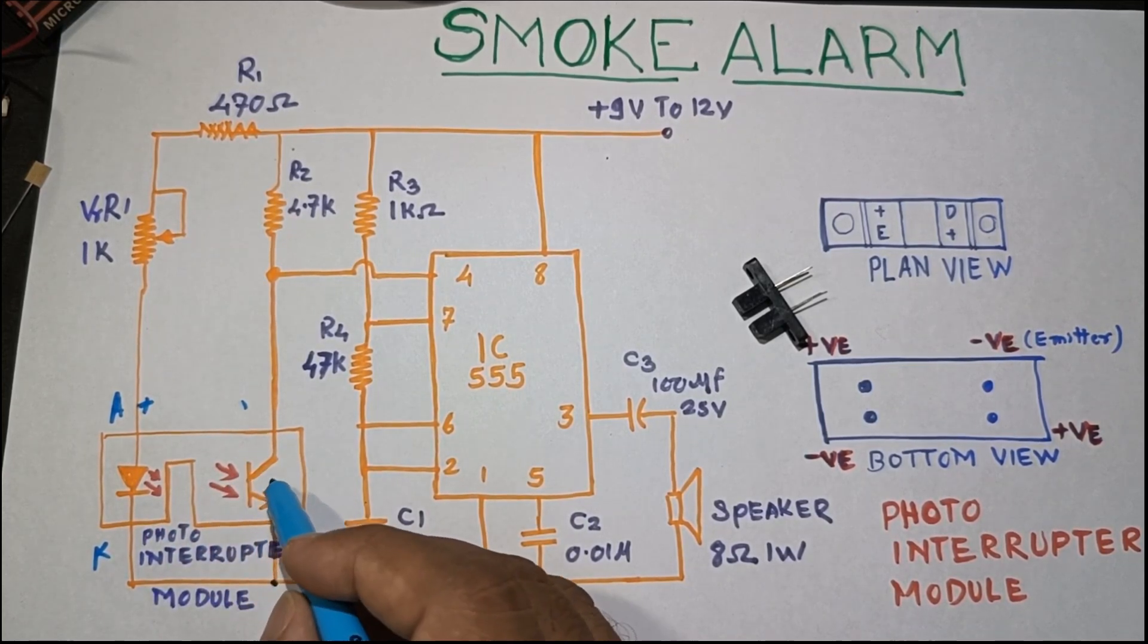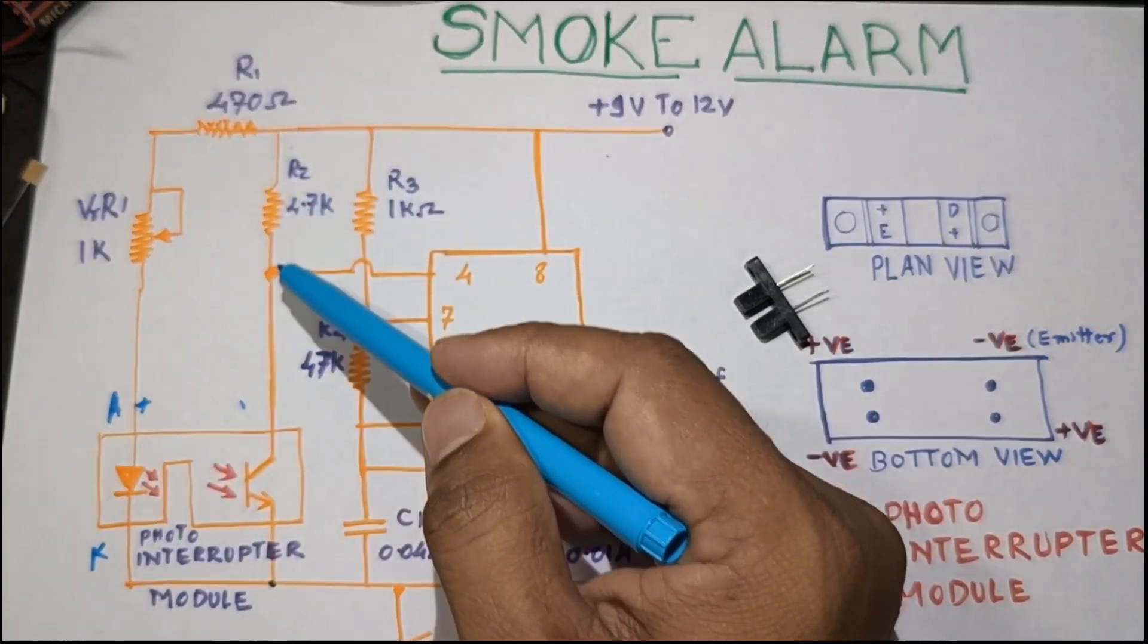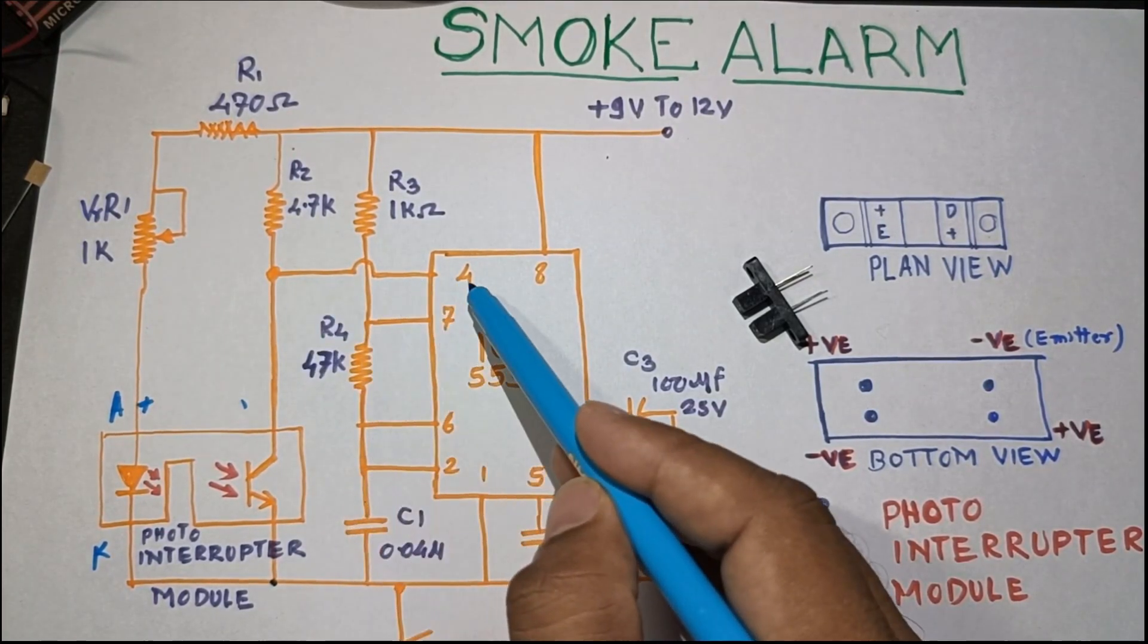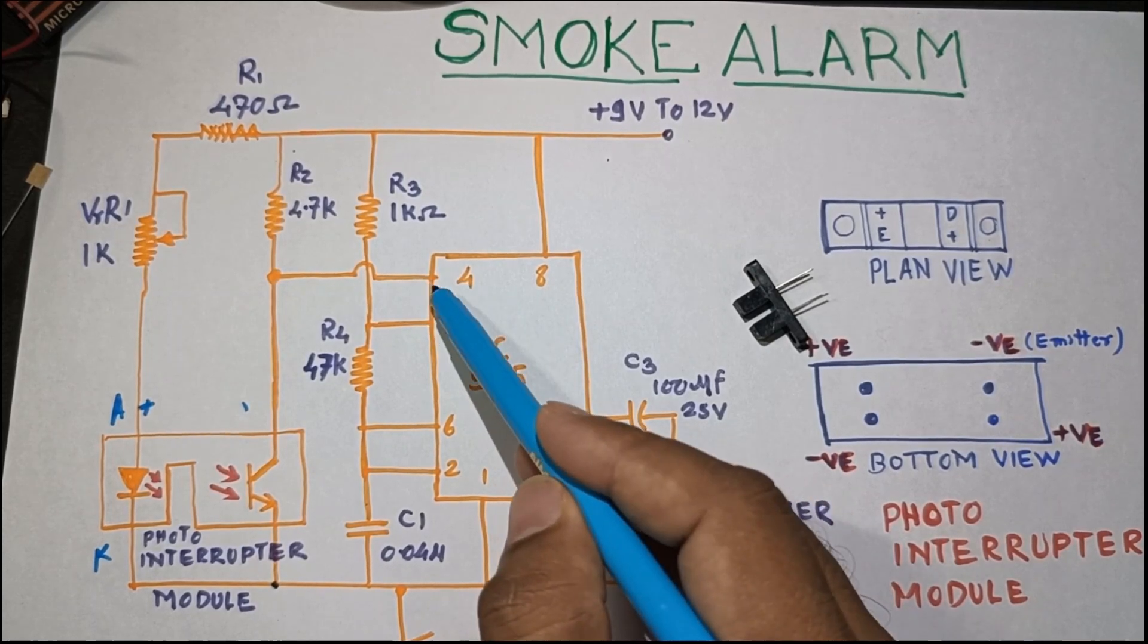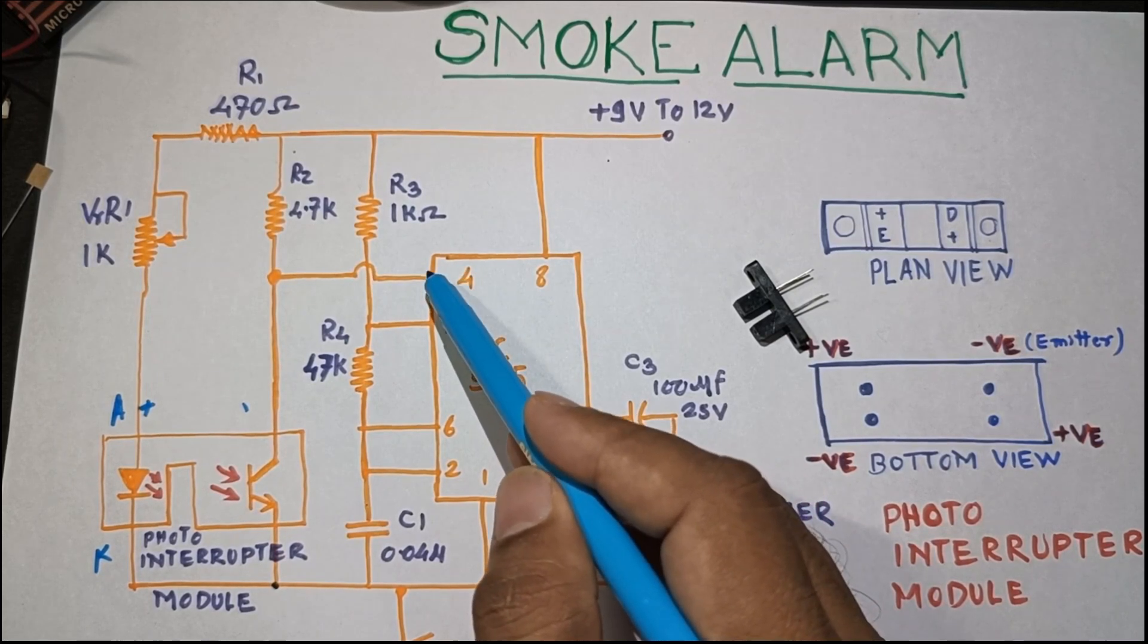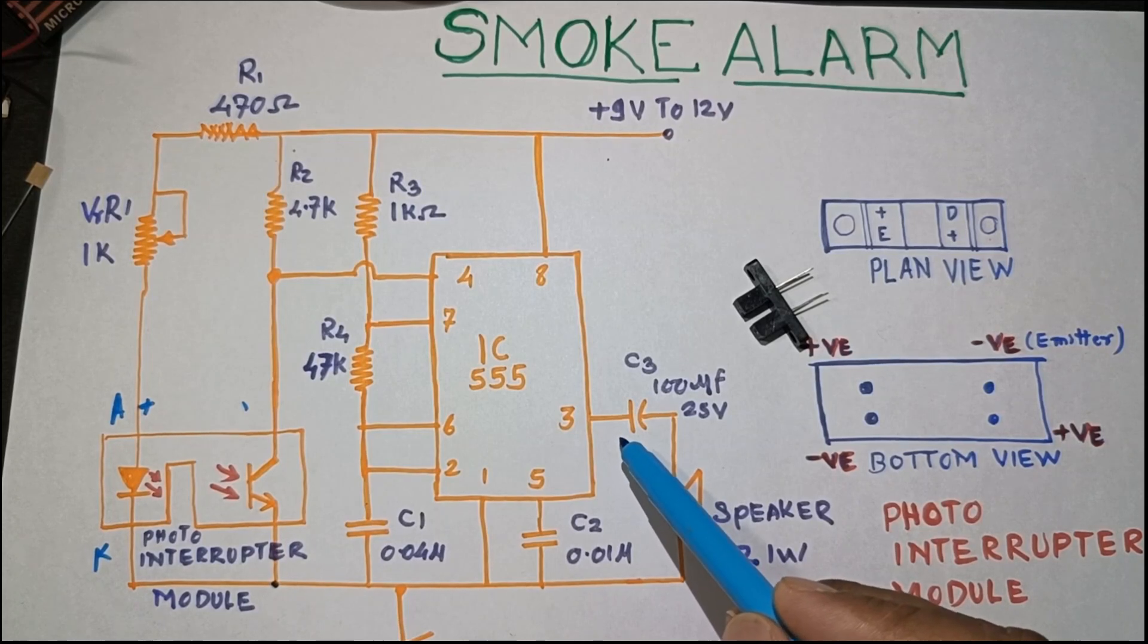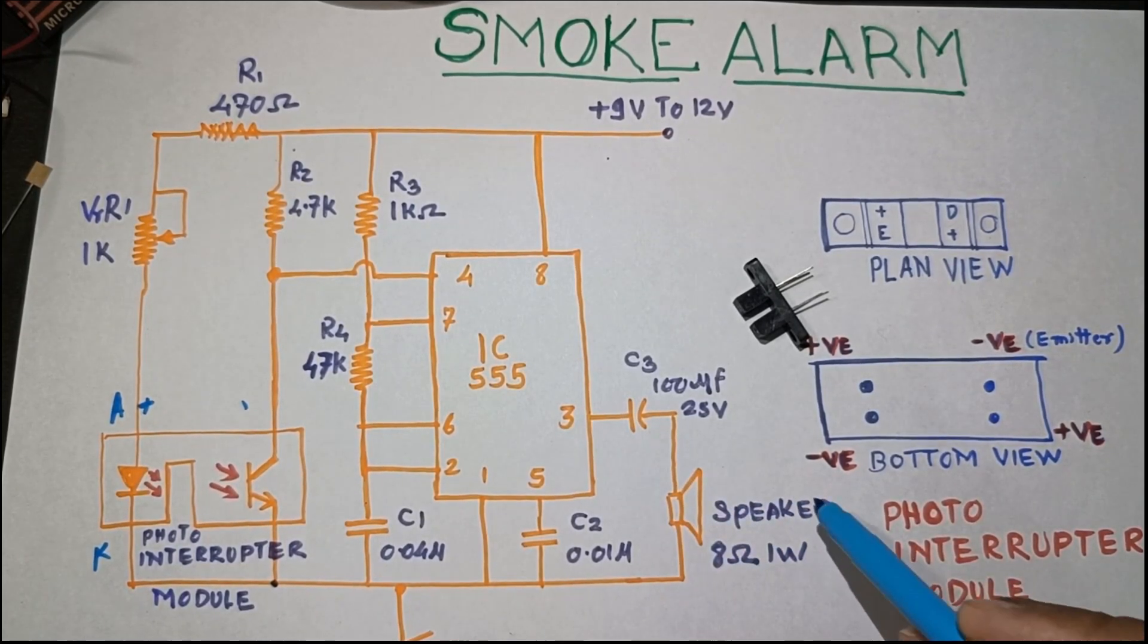When there is an interrupt developed, if any smoke or anything else comes between this, the photo transistor turns off. So whatever current was flowing towards the ground will now flow towards pin number 4, which is the reset pin. In this case, when pin number 4 has got a voltage equal to the supply voltage, it will trigger the output and alarm will turn on.